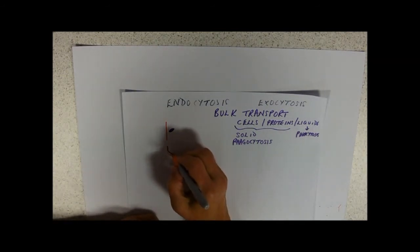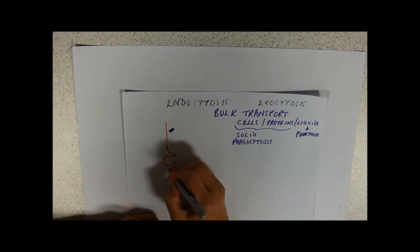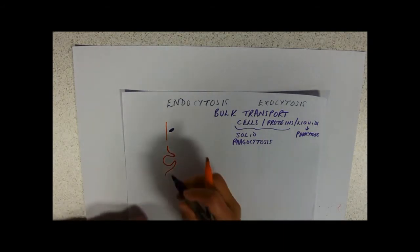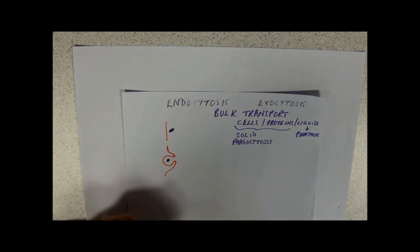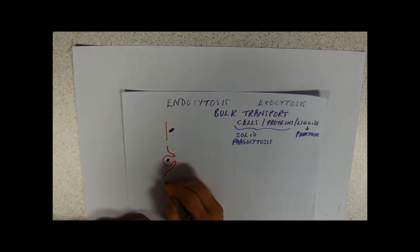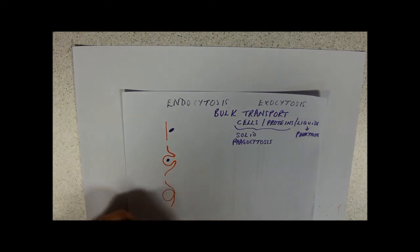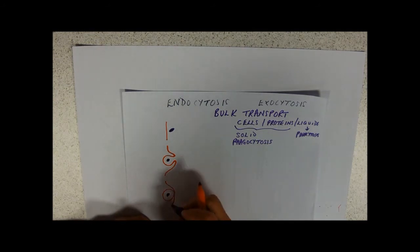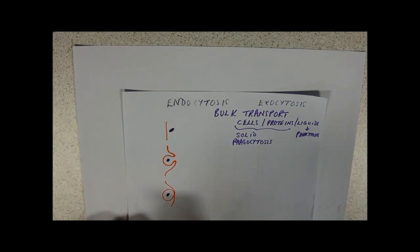So the membrane kind of loops round that particle. And it loops round so fast that the membranes can meet. Now membranes can obviously fuse and break off as we saw with the Golgi body taking vesicles. And that vesicle can then move into the cell.